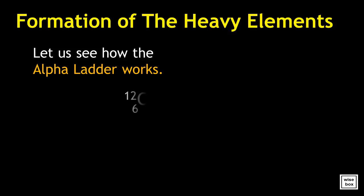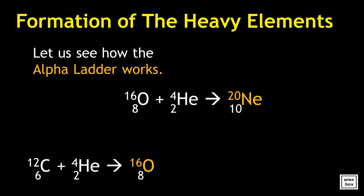It starts with the fusion of carbon-12 atom and alpha particle. It produces oxygen-16 atom. Then the oxygen-16 atom fuses with another alpha particle and produces a neon-20 atom.